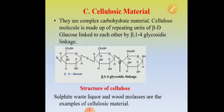Cellulosic materials are complex carbohydrate materials made up of cellulose — a homopolysaccharide. Cellulose is made up of repeating units of beta-D-glucose that are linked to each other by beta-1,4-glycosidic linkage, as you can see in the structure.